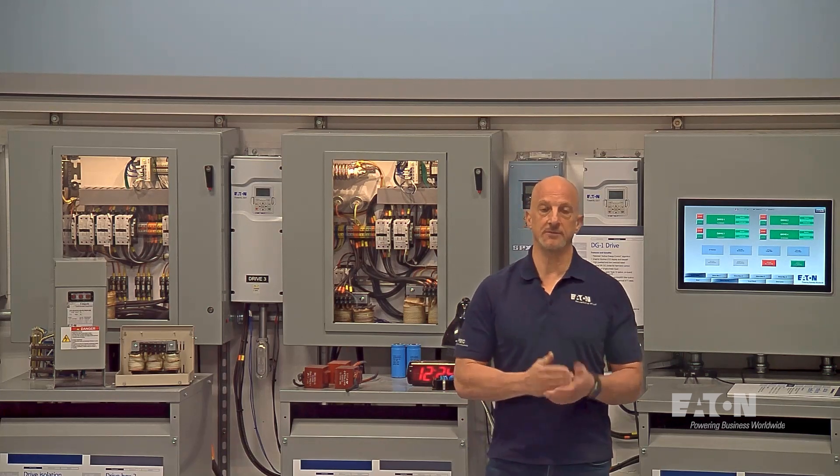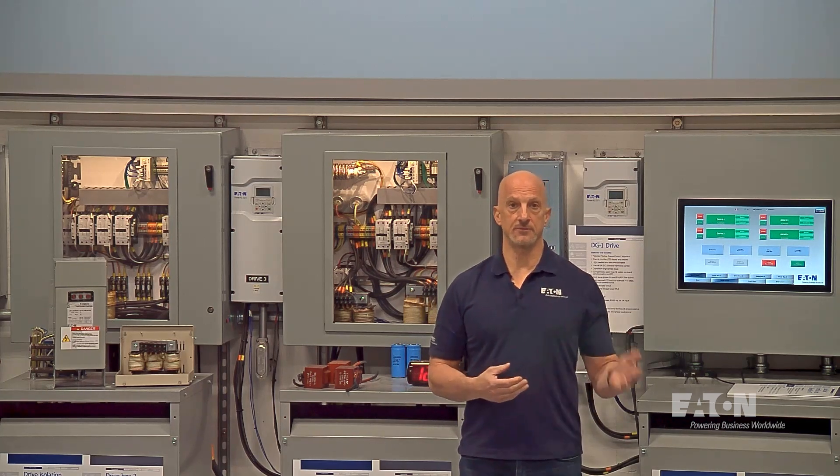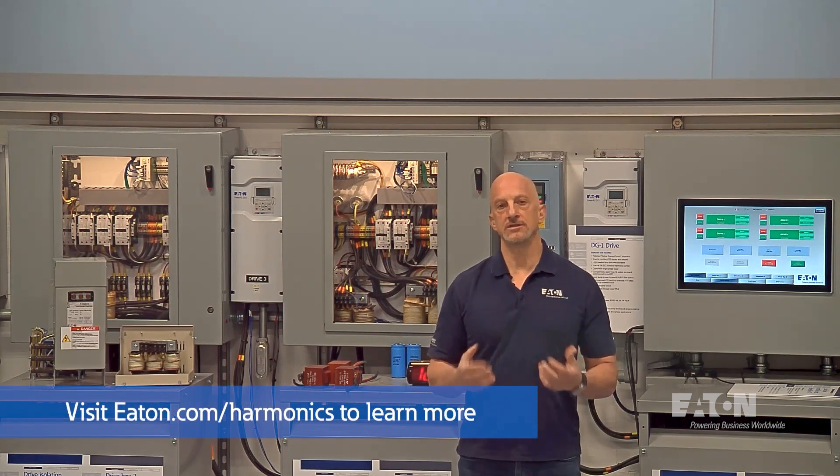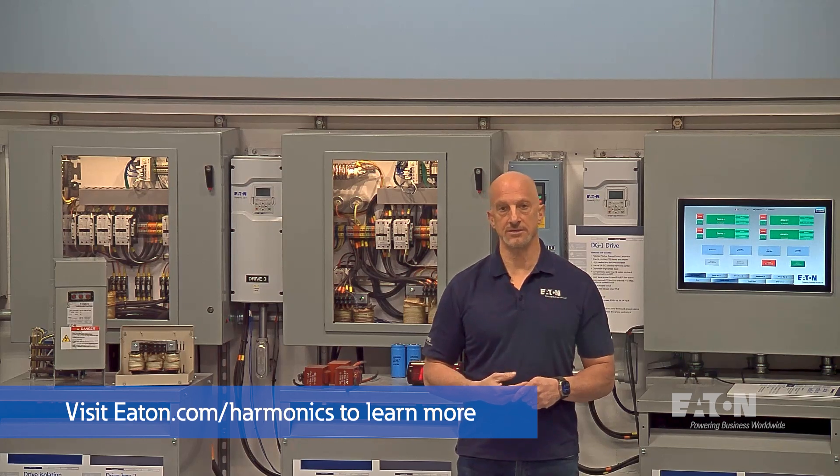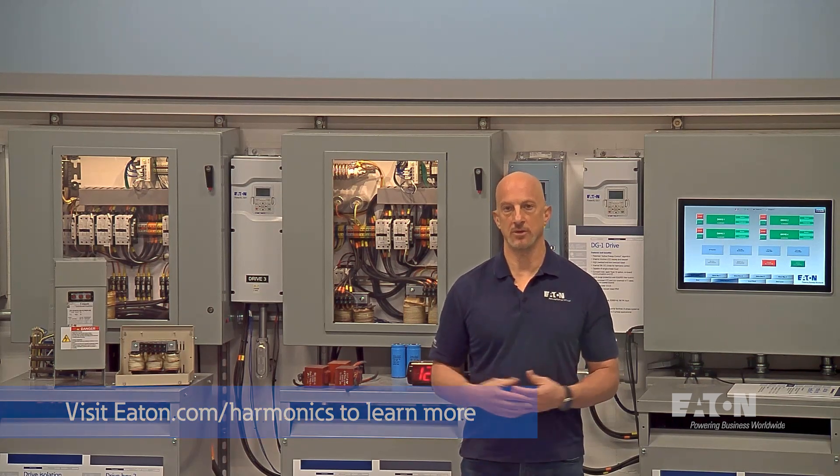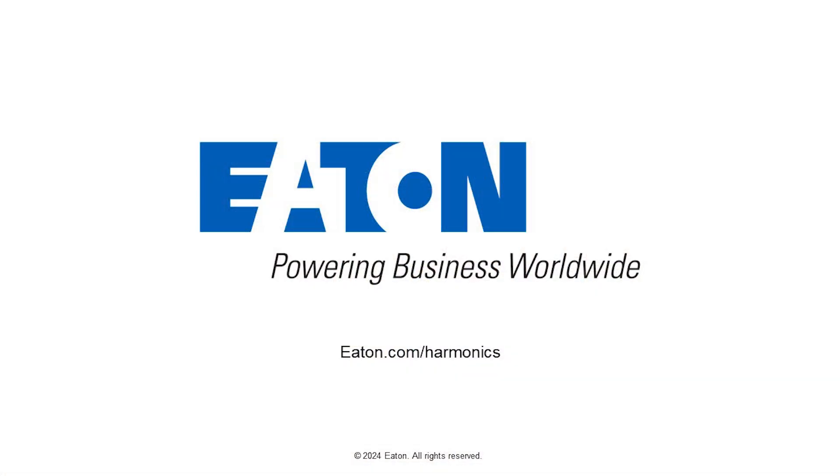And again, if I have a 12-pulse system, that NP plus or minus one is eleventh and thirteenth, twenty-third and twenty-fifth. Could be a 24-pulse system—twenty-third and twenty-fifth, and forty-seventh and forty-ninth. But anyway, those are the expected harmonics on a power system. And fortunately, they're pretty characteristically similar across the board.